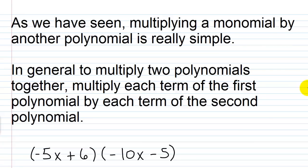As we have seen, multiplying a monomial — that's just a single term — by another polynomial is really, really simple. Generally, to do this, you're just going to multiply the monomial by each term in the polynomial, using distributive property.